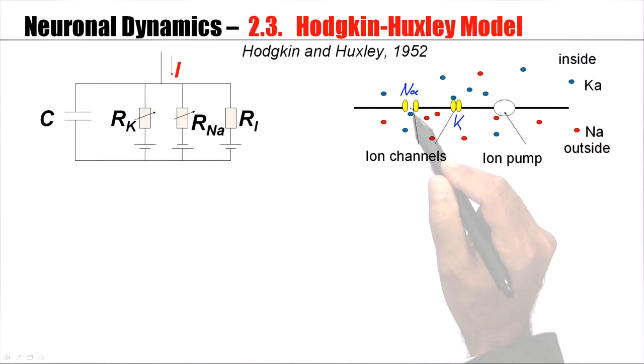Hodgkin and Huxley found that the sodium channel, potassium channel, together with a third channel, which they called leak channel, which really is a summary of all the other channels that might give minor contributions, they could arrive at a very nice description using this equivalent circuit.